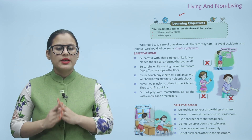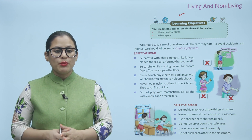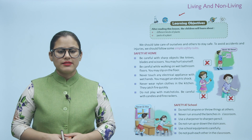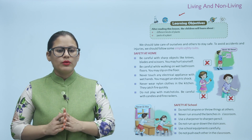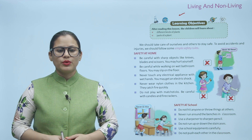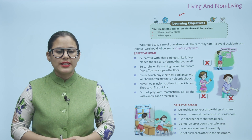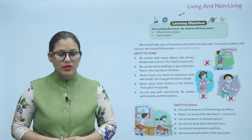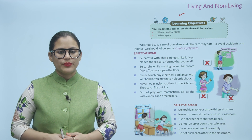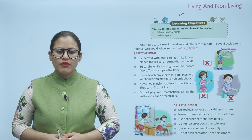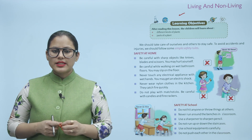To avoid accidents and injuries, we should follow some simple safety rules. Safety at home: be careful with sharp objects like knives, plates, and scissors — you may hurt yourself. Be careful while walking on wet bathroom floors — you may slip. Never touch any electrical appliance with wet hands — you may get an electric shock. Never wear nylon clothes in the kitchen as they catch fire quickly.